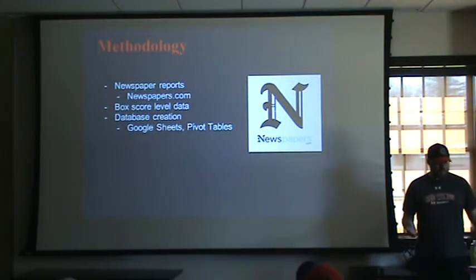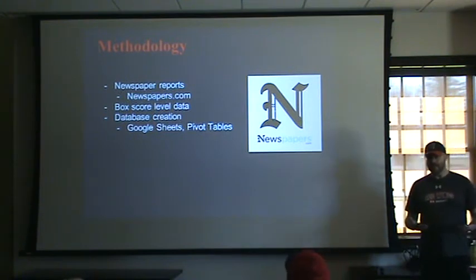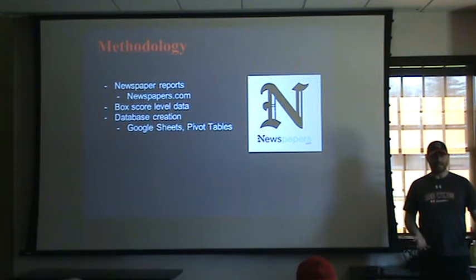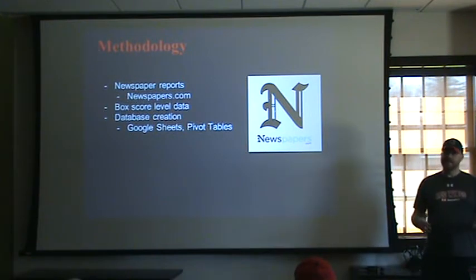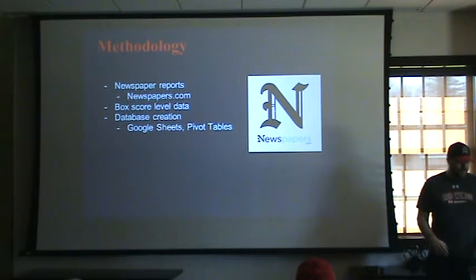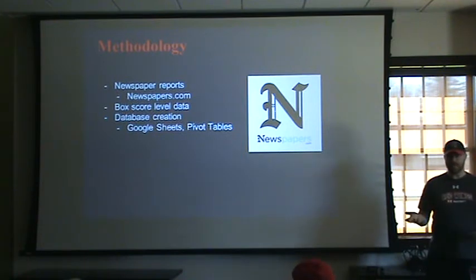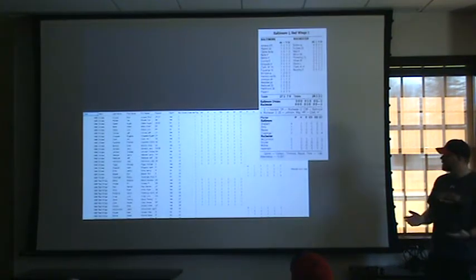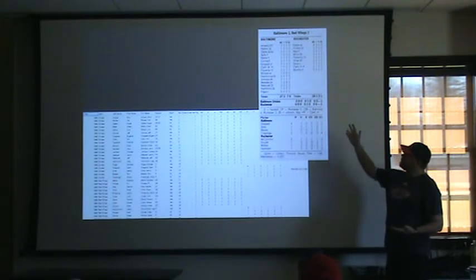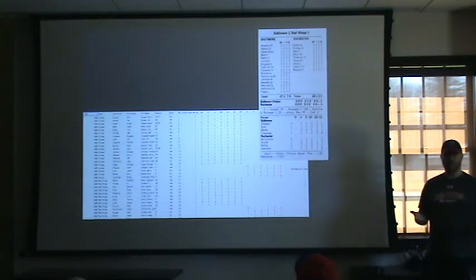My method for this, much like Nate, was spending a lot of time on Newspapers.com. This provided me with box score level data. Going back in time even beyond a few years ago, the play-by-play data just isn't there for games. So everything I reference is going to be based off of box score level data. There can be inherent flaws in it. Once I tracked down all the box scores on Newspapers.com, I created a database using Google Sheets and then pivot tables to compile the career totals.